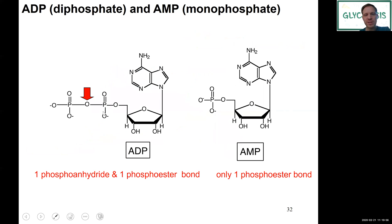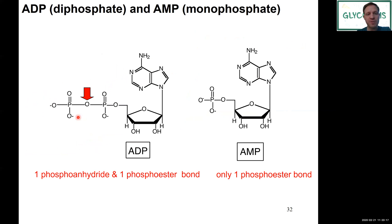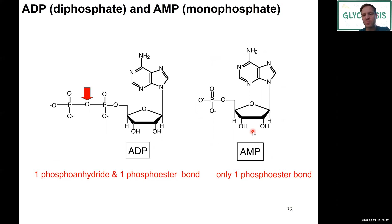When we break these bonds, one product is ADP — the diphosphate. One phosphoanhydride bond is lost; the outer phosphoryl group has gone, now attached to glucose to make glucose-6-phosphate. You can also go further: cleave the secondary phosphoanhydride bond and you get AMP — adenosine monophosphate — which only has the one phosphoester bond left. The phosphoester bond has much less energy than a phosphoanhydride bond, so AMP is actually a signal in the body for low energy — a warning signal that says we are really running out of energy.